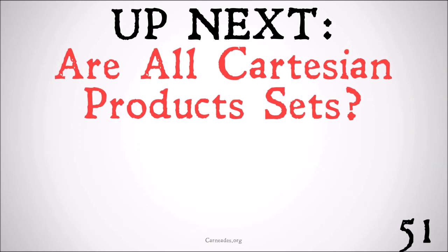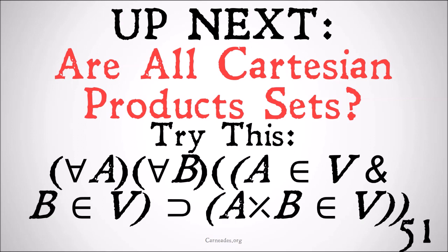Up next, are all Cartesian products sets? It's a proof that is going to be the longest proof we are going to do, or at least we have done, I would guess in any logic series yet. I think this may be the longest proof we've ever done. So before you jump in, be warned, it will be a lot of work. But if you want to, give this a try. For all A and all B, A is a member of V and B is a member of V implies that A times B is a member of V. Or in other words, if the members of a Cartesian product are sets, then the Cartesian product itself is a set. If the first part and the second part of a Cartesian product, also called the domain and range, which we'll cover in a bit, are sets, then the whole thing is a set.